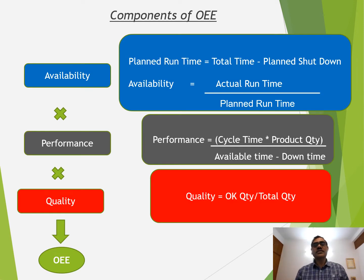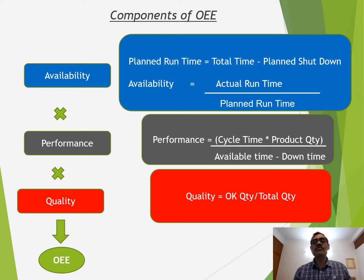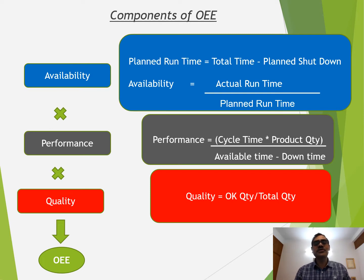So what are the components of OEE? There are three components. First is Availability. We calculate actual runtime divided by the planned runtime. Planned runtime is total time minus the planned downtime. Now if we also reduce the unplanned downtime from the planned runtime, it gives us the actual runtime. So availability basically captures the impact of unplanned downtime.